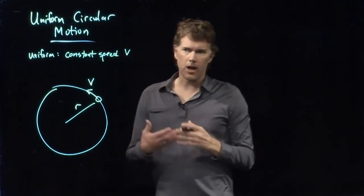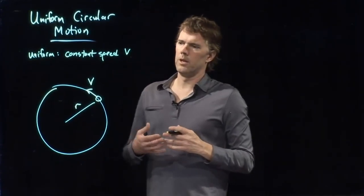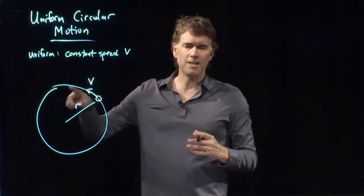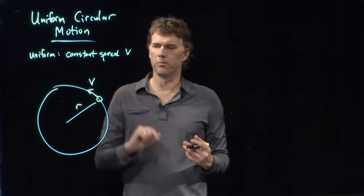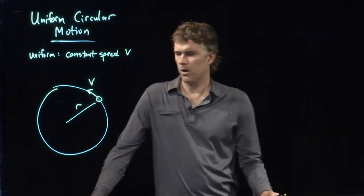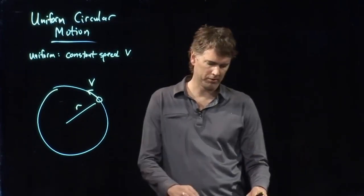Later we will learn about non-uniform circular motion, which just means that the speed changes as you go around. But for now, let's just consider uniform circular motion, which is constant speed. That's what our picture looks like.